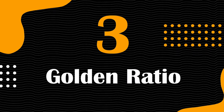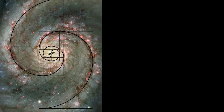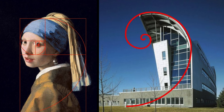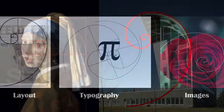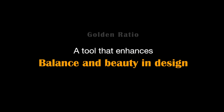Next up is the Golden Ratio. In the world of design, there's a timeless secret known as the Golden Ratio — a mathematical proportion approximately equal to 1.618. This ratio is found in nature, art and architecture and is renowned for its aesthetic appeal. Designers use the Golden Ratio to create visually pleasing compositions by applying its harmonious proportions to elements such as layout, typography and images. It's a tool that enhances balance and beauty in design.